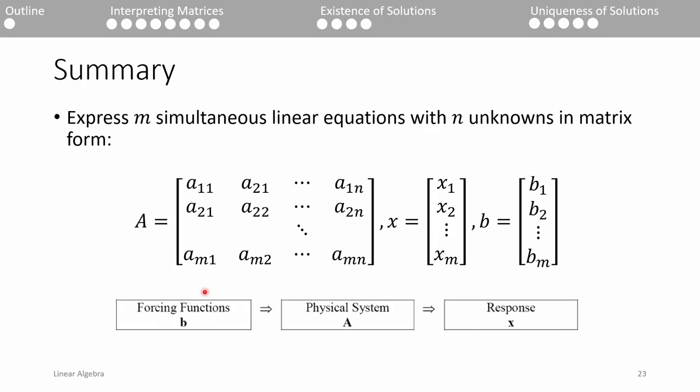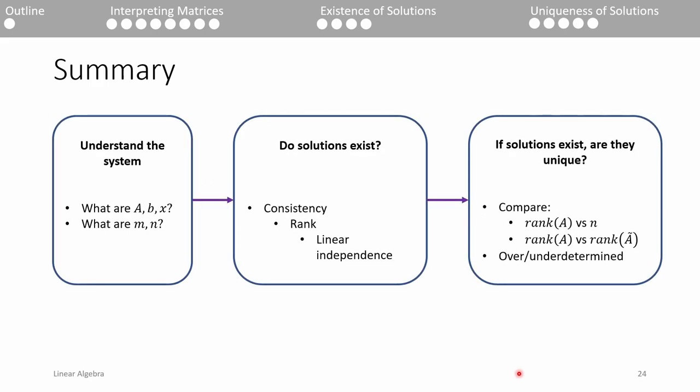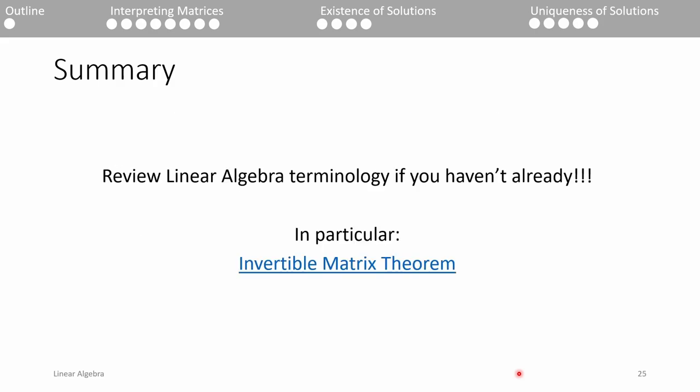To summarize, the first part of this lecture reviewed the physical and geometric interpretations of the linear algebra problem Ax equals b. In particular, the b vector represents the forcing functions exerted upon the system. The A matrix captures the properties of the system, and the x vector contains the response variables. We then pivoted to discussing the existence and uniqueness of solutions. The linear independence, rank, and consistency of a system determine the existence and uniqueness of solutions. I hope everything in this lecture was a review. This is a reminder to review your linear algebra notes even if you understood everything. The Invertible Matrix Theorem is a great resource to review because it lists all the ways you can tell if a matrix can be inverted. It can give you a refresher on the various ways you can evaluate a matrix not only for invertibility, but for other things like linear independence as well. See you next time.